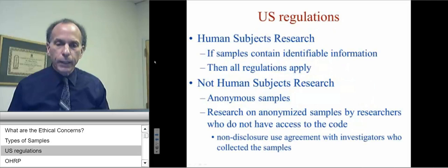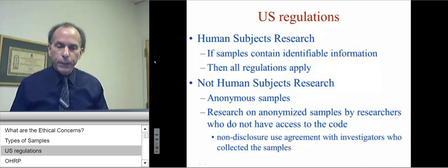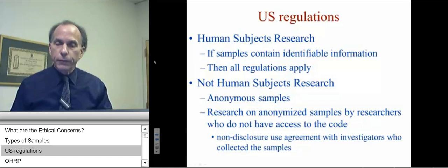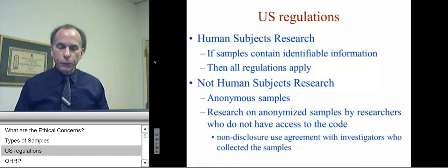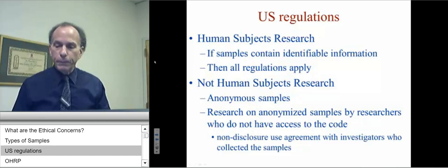This slide reviews U.S. regulations regarding human-subject research. We are doing human-subject research if the samples contain identifiable information, in which case all regulations apply. However, there are certain conditions in which one is not considered to be doing human-subject research. One: if the samples are anonymous, it's not considered human-subject research because we don't have any identifiers. Second: research on anonymized samples by researchers who do not have access to the code.